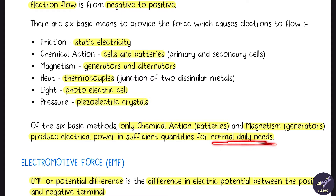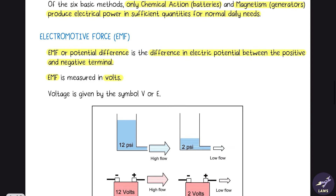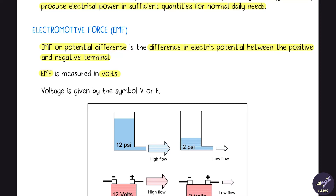Next is electromotive force or EMF. It is the potential difference — the difference in electric potential between the positive and negative terminal, as we saw in the case of the battery.